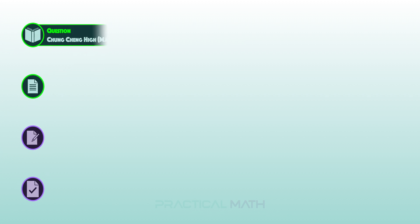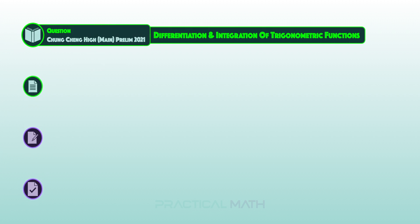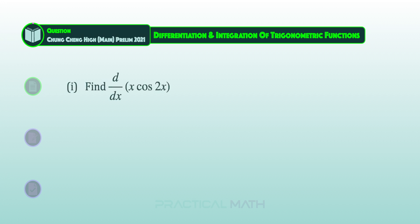Hey, this is Dexter. This video is on the topic of differentiation and integration of trigonometric functions. We will also be learning how to do integration using the reverse of differentiation. In the first part of the question, differentiate x cosine 2x with respect to x.